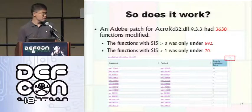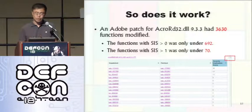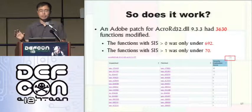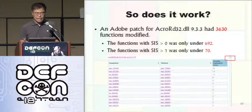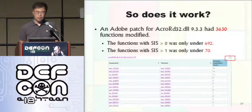The actual question will be: is it working or not? I have an example here — AcroRd32.dll from Adobe. They released version 9.3.3 recently, a few months ago. I diffed 9.3.3 with 9.3.2, and it created 3,630 entries of modified functions. It's almost impossible to go through every function to find security patches. But if you use the security implication score, entries with score zero are only 900 and entries with score more than one were only 70. So you can save a lot of time and effort.